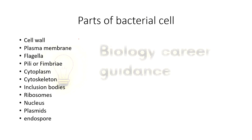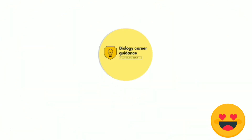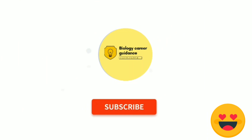There are many components in bacterial cells. Let me list them: cell wall, plasma membrane, flagella, fimbriae or pili, cytoplasm, cytoskeleton, inclusion bodies, ribosomes, nucleoid, plasmids, and endospores. We will complete the full knowledge of ultrastructure of bacteria and discuss these components in the next video. If you liked this video, please hit the like button, subscribe to the channel, and share it with your friends. Thank you for watching.